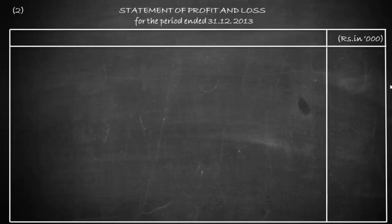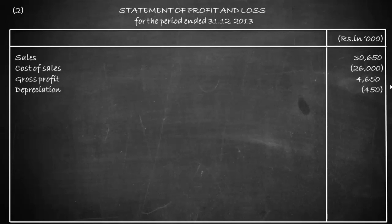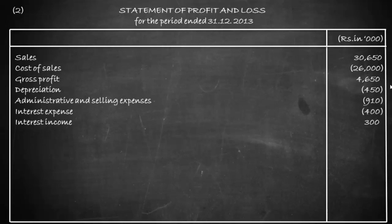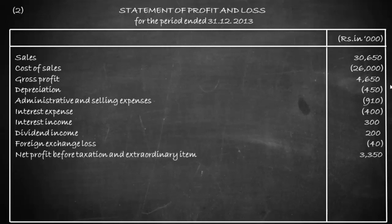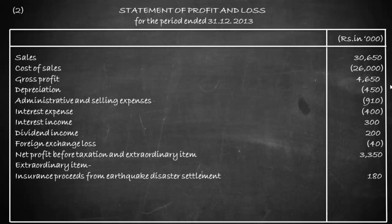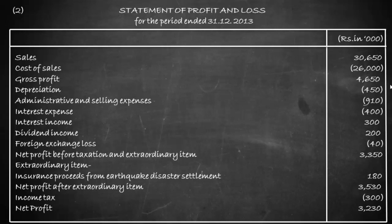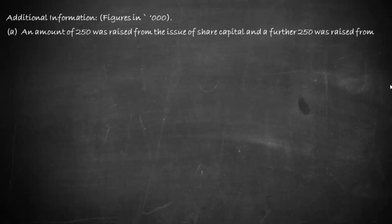Moving to the Statement of Profit and Loss for the period ended 31st December 2013: sales are 30,650; cost of sales is 26,000; gross profit is 4,650. Depreciation is 450; admin and selling expenses are 910; interest expense is 400; interest income is 300; dividend income is 200; foreign exchange loss is 40. Net profit before taxation and extraordinary items is 3,350. The extraordinary item — insurance proceeds from earthquake disaster settlement — is 180, giving net profit after extraordinary item of 3,530. Income tax is 300, so net profit is 3,230.